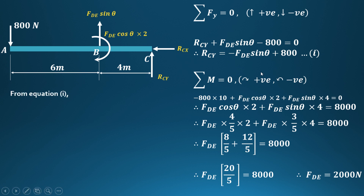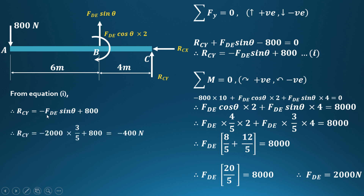From Equation 1, RCy = −FDE·sin θ + 800. Substituting FDE = 2000 and sin θ = 3/5: RCy = −2000×(3/5) + 800 = −1200 + 800 = −400 N.